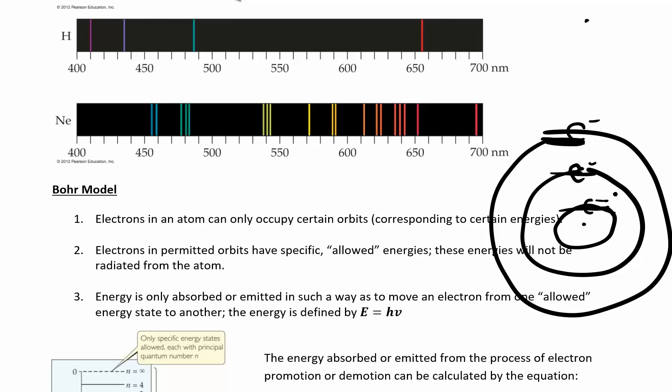And if it absorbs a certain amount of energy, if you take this electron on this level and you move it to this energy, it absorbs a certain amount of energy, and that energy, we already know, is equal to hc over lambda.